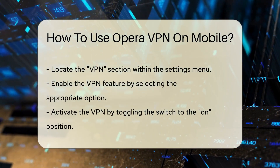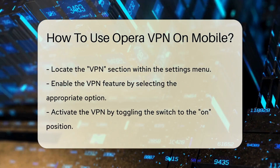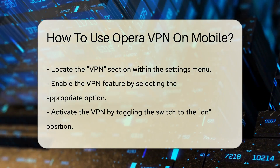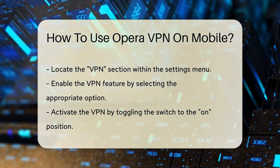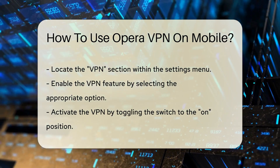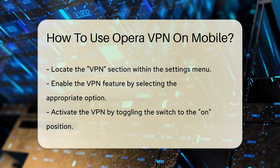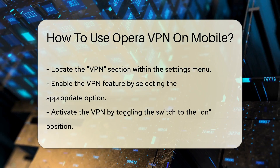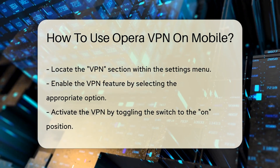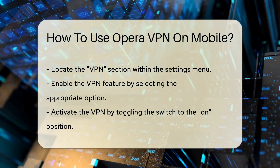In the Settings menu, locate the VPN section. Here, you will find an option to enable the VPN feature. After enabling the VPN, you will see a toggle switch. Activate this switch to turn on the VPN.